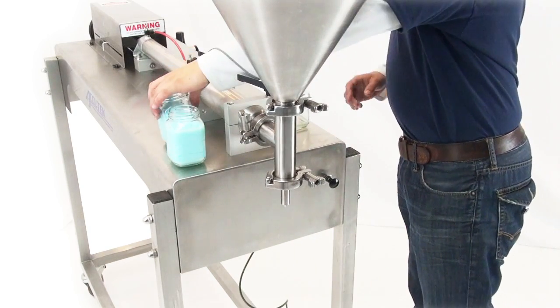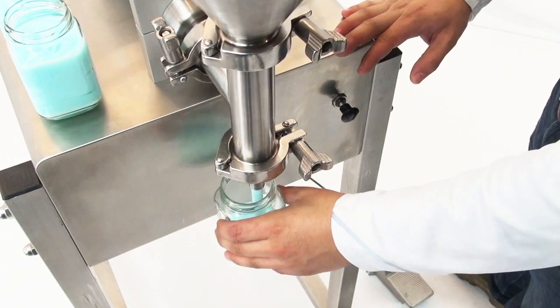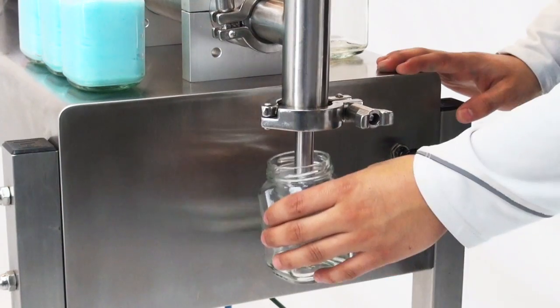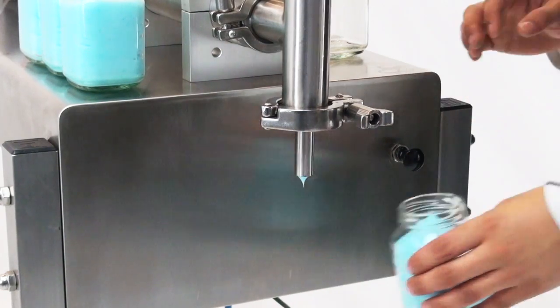The precise dose fills are a key feature of the Accutek SVF machines. It helps to provide bottom line savings by reducing the amount of product overfill that can happen with other volumetric fillers.